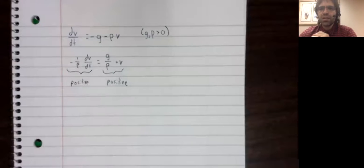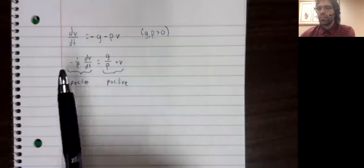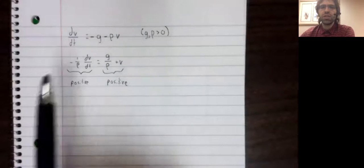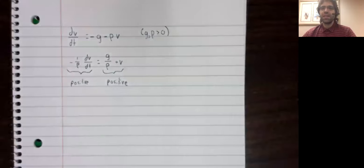Which means it's actually decreasing. So from the moment the object is launched to the moment it hits the ground, velocity is always decreasing. And acceleration is always negative.